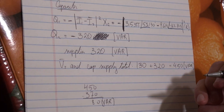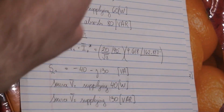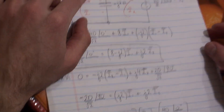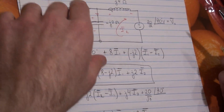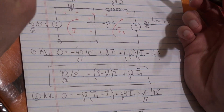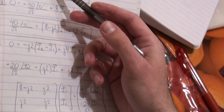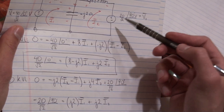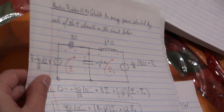Final answer: the 8-ohm resistor absorbs 100 watts of real power. The capacitor and inductor absorb no real power. The inductor absorbs 370 VARs. The capacitor supplies 320 VARs, V2 supplies 130 VARs, and the remaining 80 VARs are absorbed by voltage source V1. Everything works out.